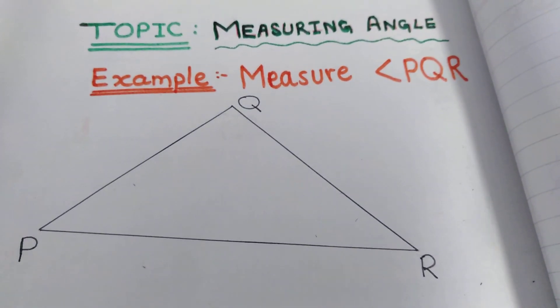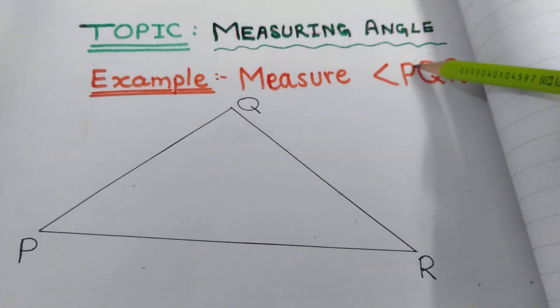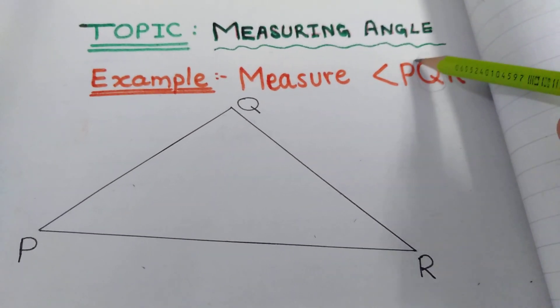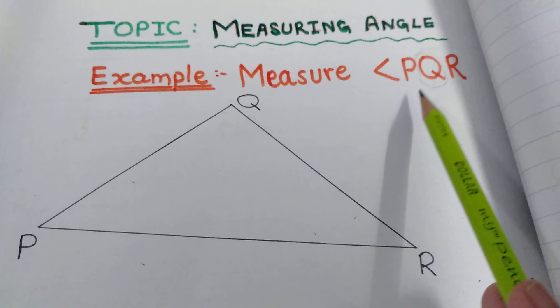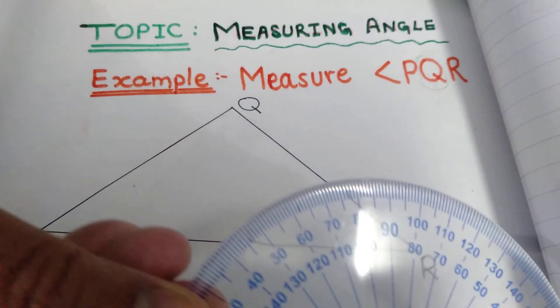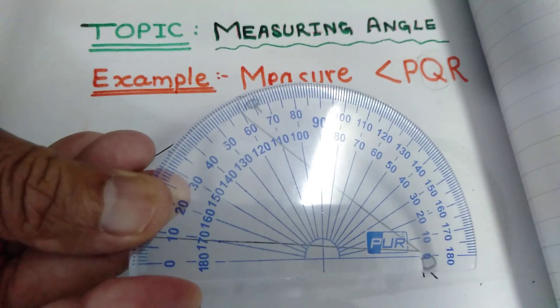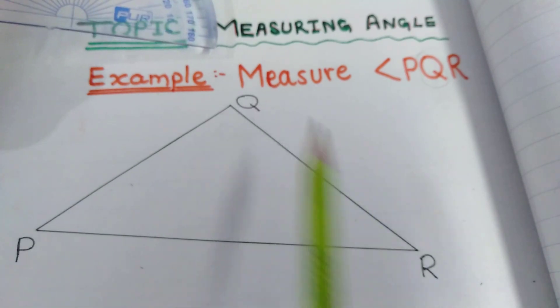We will take Q because it is between P and R. We will use protector for measuring angle PQR.